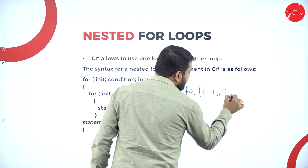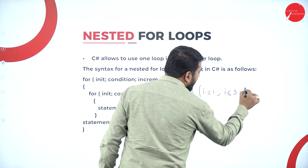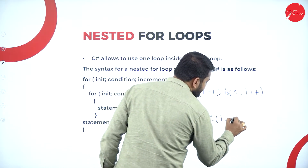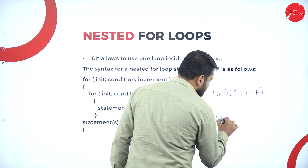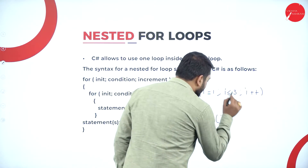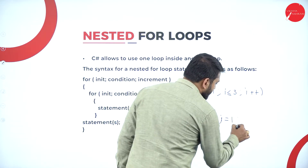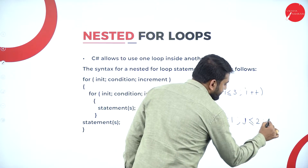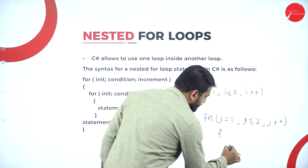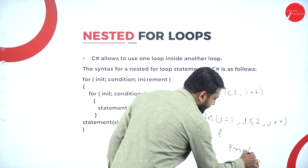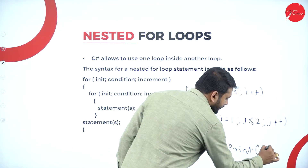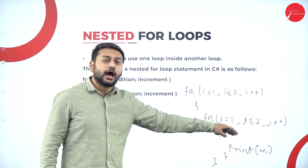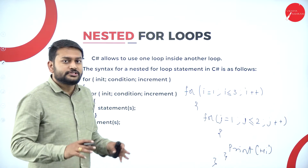Suppose I have a for loop like this: i equal to 1, i less than or equal to 3, and i plus plus. Again, inside I have another for loop. Let me take j since I have already used i. So j equal to 1, j less than or equal to 2, j plus plus. Let me just print something here — print 'high'. Can you tell me how many times 'high' will be printed?